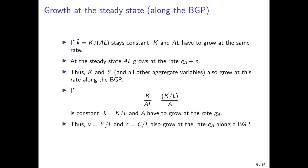If K-tilde is constant at the steady state, then aggregate capital divided by efficiency units of labor stays constant, meaning capital and efficiency units of labor must grow at the same rate. The product of technology A and labor L grows at the rate of technological progress GA plus the rate of population growth N. Therefore, aggregate capital must also grow at rate GA plus N at the steady state, and the same holds true for aggregate GDP.